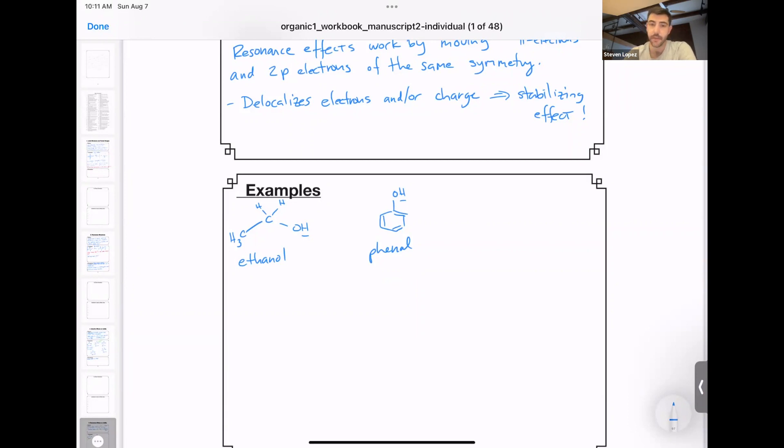So if we deprotonate ethanol, of course, the acidic proton, then we end up with this anion, the ethoxide anion. Now we can do the same thing for phenol. So we compare their stabilities.